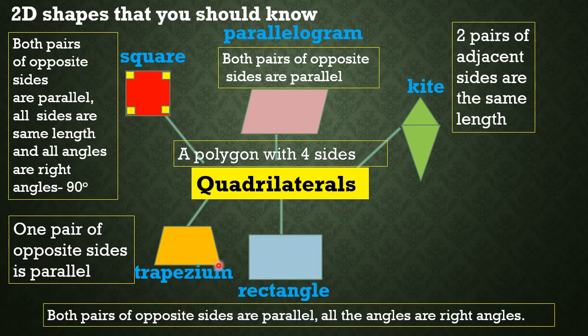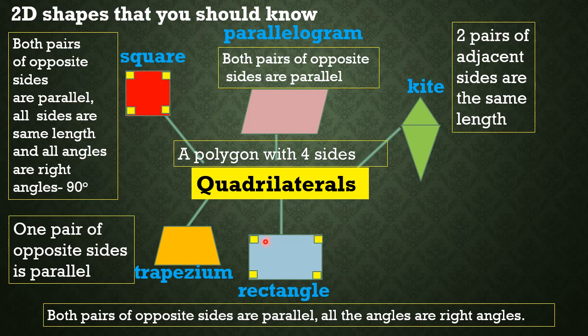Rectangle. A rectangle has both pairs of opposite sides that are parallel. All the angles are right angles — a rectangle has four right angles, so each angle measures 90 degrees. A rectangle also has two pairs of parallel sides: one pair and another pair.